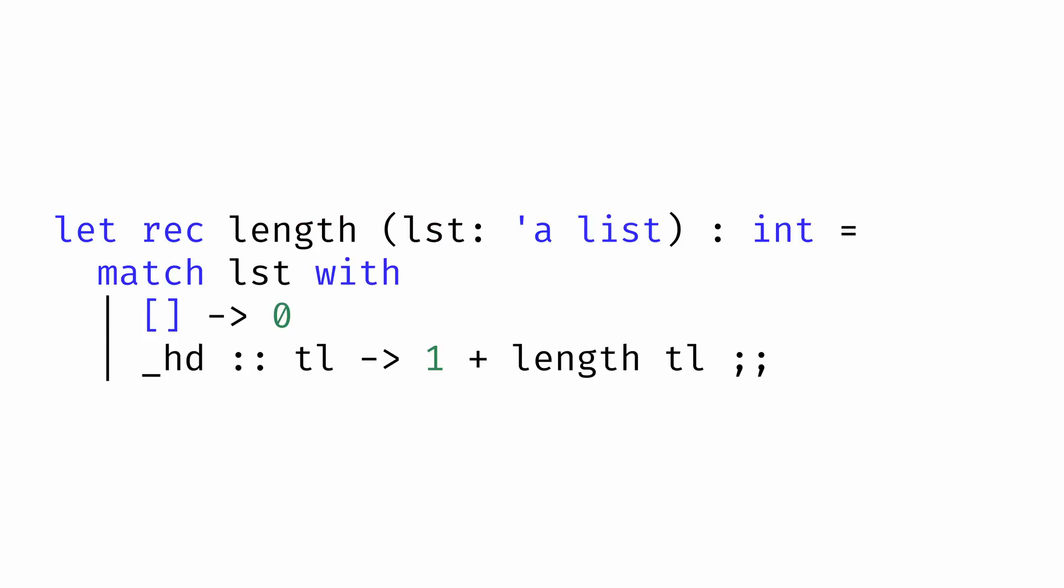In our original version of the length function, the reason we needed to suspend our call and then add a new stack frame is because when the nested call returns a value, we need to do something with the resulting value, adding one in this case.